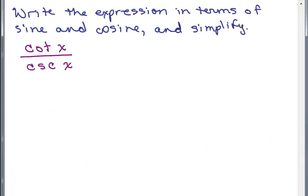Let's try this. Write the expression in terms of sine and cosine and simplify. We have cotangent x over the cosecant of x.